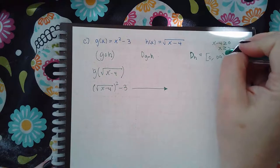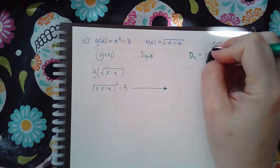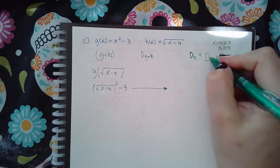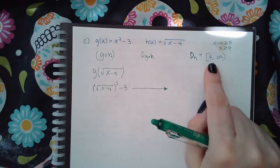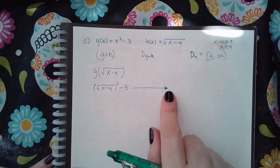I'm sorry, not 0. If I add 4 over, I get 4. So from 4 to infinity. So this is my potential domain. I just need to make sure that nothing here is going to happen.